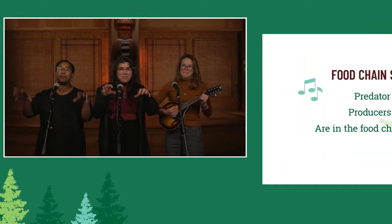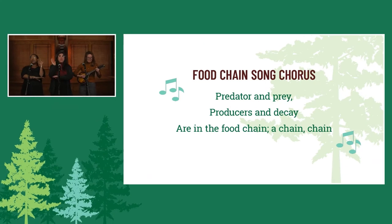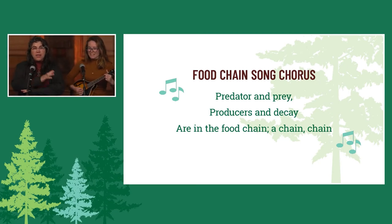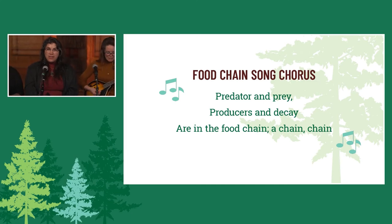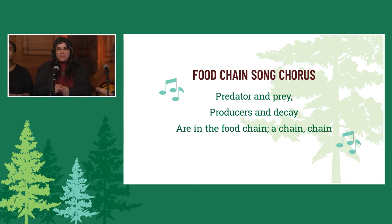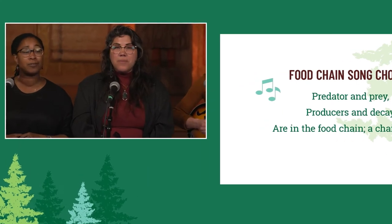Everybody now: predators and prey, producers, and decay are in the food chain — a chain, chain. Predators and prey, producers, and decay are in the food chain — a chain, chain. A rabbit comes around and eats the plants down in the food chain — a chain, chain. But the cycle doesn't stop because rabbits aren't the top of the food chain — a chain, chain.